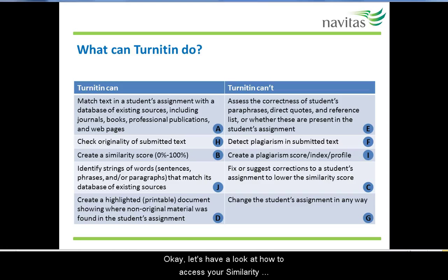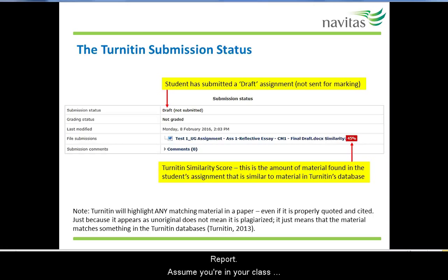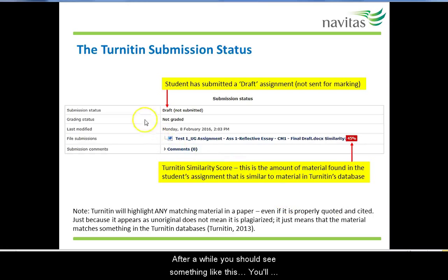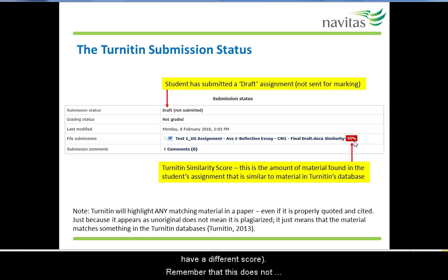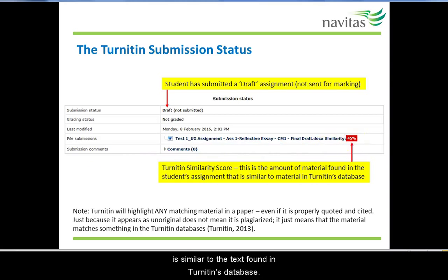Let's have a look at how to access your similarity report. Assume you're in your class space and have submitted a draft assignment to Turnitin. After a while you should see something like this. You'll notice that your assignment is shown as draft, and you'll also see that Turnitin has examined the assignment and found 45% similarity. Of course, your assignment will have a different score. Remember that this does not indicate plagiarism, only that your assignment has text that is similar to the text found in Turnitin's database.